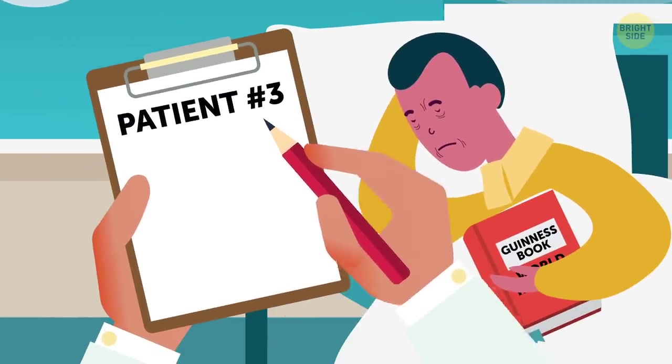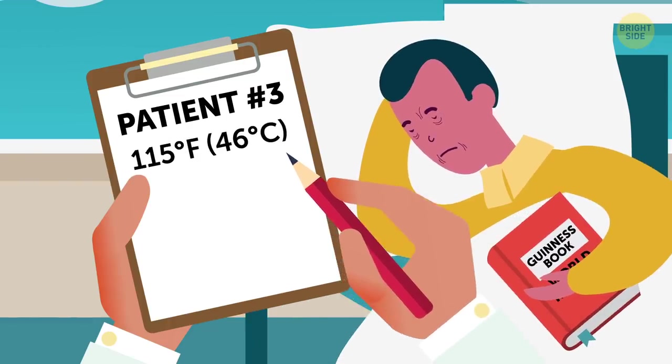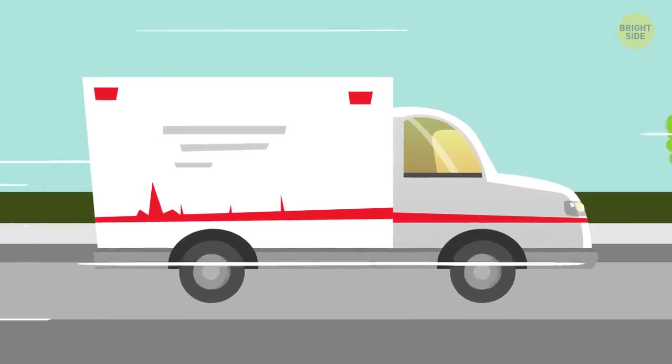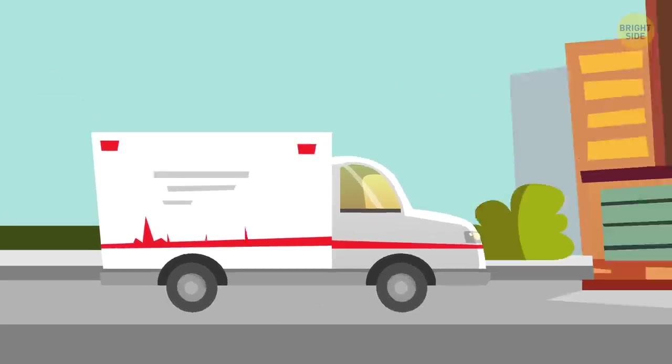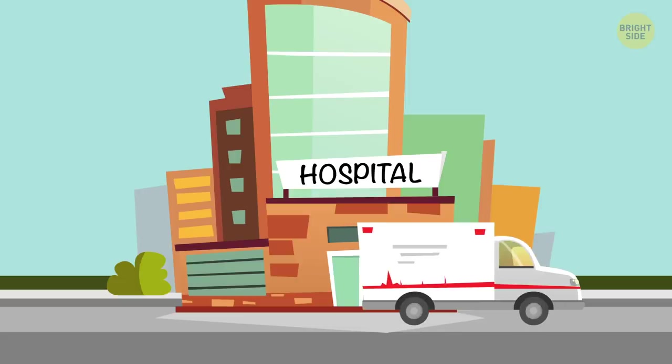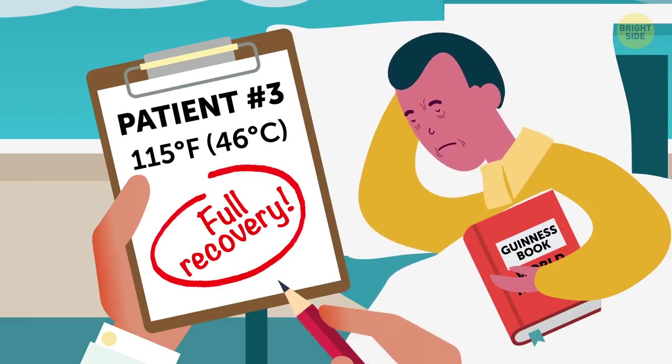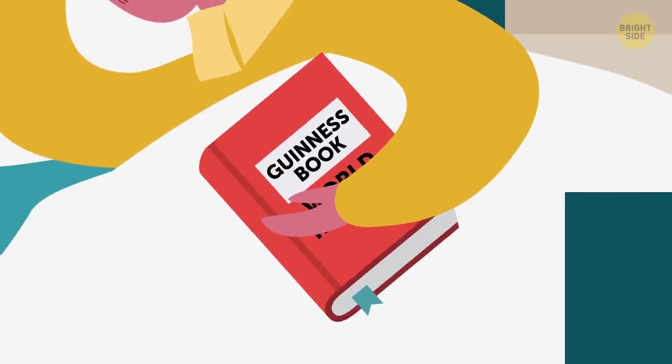My next stop is even hotter than that, at 115 degrees. That's the highest human body temperature ever recorded. On July 10, 1980, a 52-year-old man was brought to the hospital with heat stroke. Luckily, he survived too, and made it to the Guinness Book of World Records.